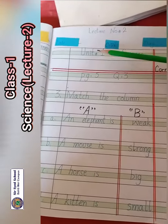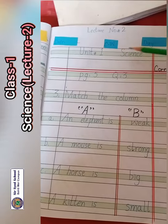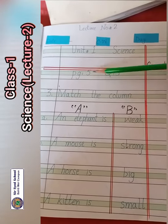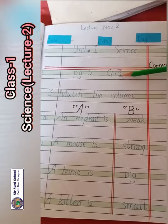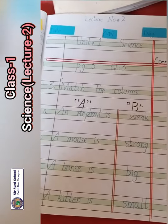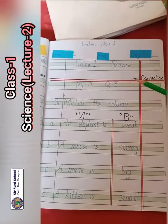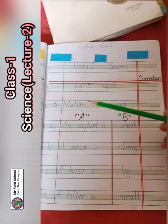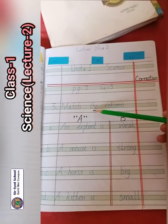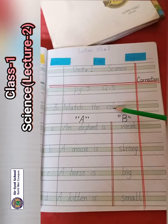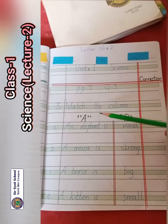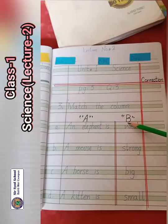Write the date, day. Unit 1, science, page number 5. Question number 3 — M-A-T-C-H, match. T-H-E C-O-L-U-M-N, column. Match the column — column A and column B.